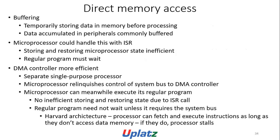Direct Memory Access (DMA) and buffering: data is temporarily stored in memory before processing. Data accumulated in peripherals is commonly buffered; the microprocessor can handle this with an ISR, but storing and restoring microprocessor state is inefficient and the regular program must wait. A DMA controller is more efficient — it is a separate single-purpose processor. The microprocessor relinquishes control of the system bus to the DMA controller, can execute its regular program, and only stalls if it needs the system bus. Harvard architecture processors can fetch and execute instructions as long as they do not access data memory; if they do, the processor stalls.